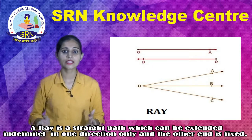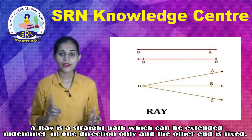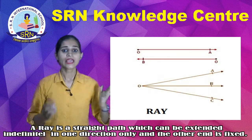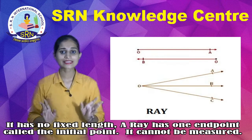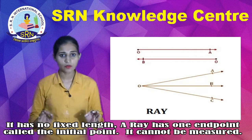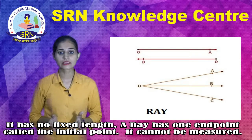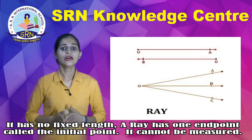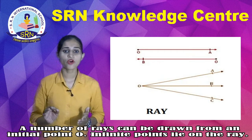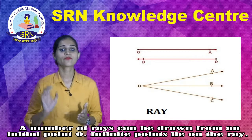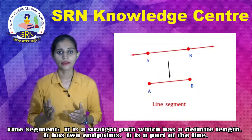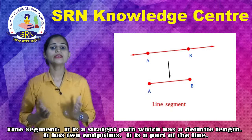Number three is Ray. A ray is a straight path which can be extended indefinitely in one direction only, and the other end is fixed. It has no fixed length. A ray has one endpoint called the initial point. It cannot be measured. A number of rays can be drawn from an initial point. Infinite points lie on the ray.